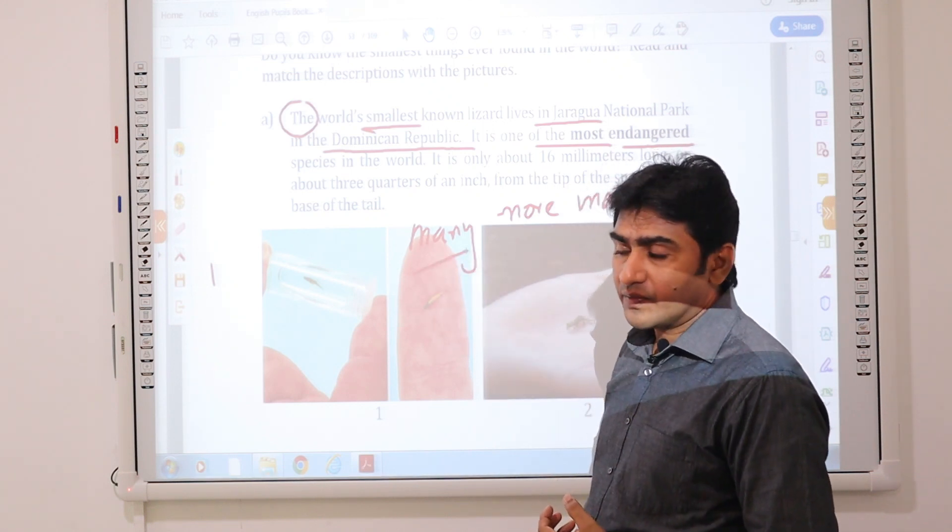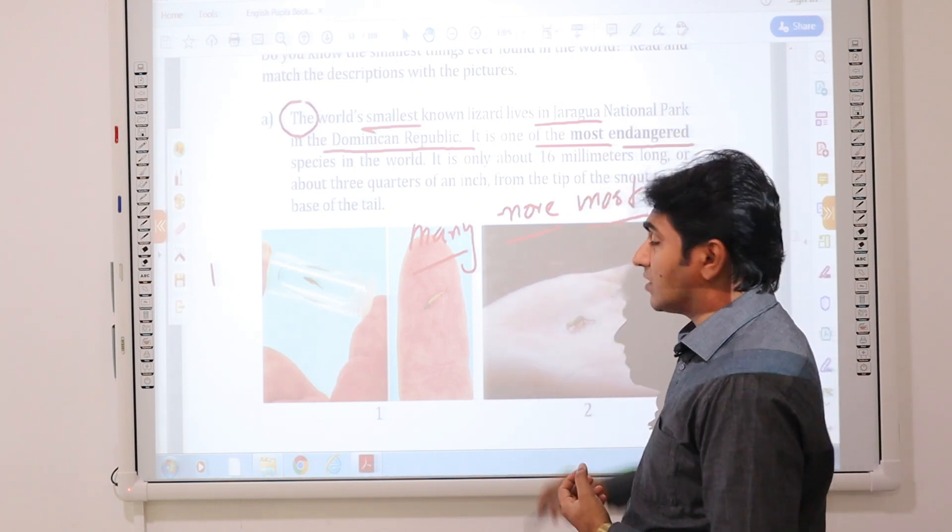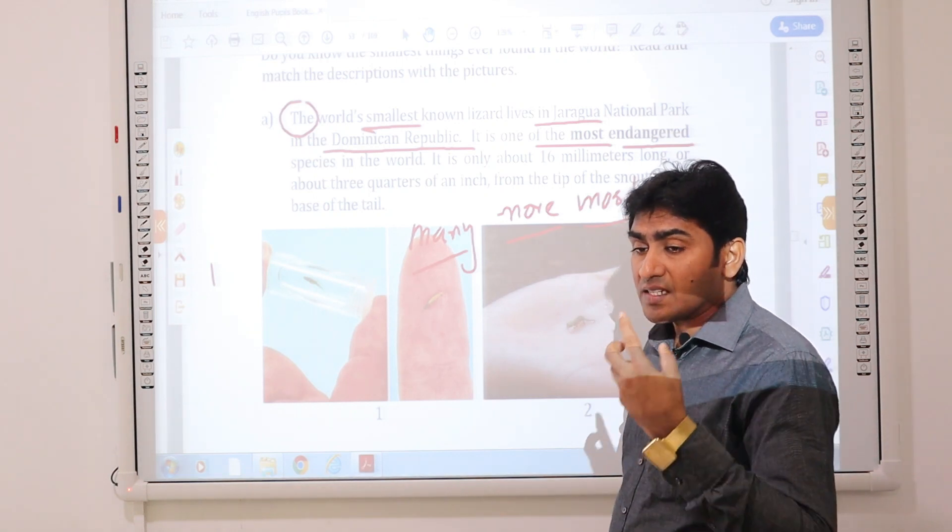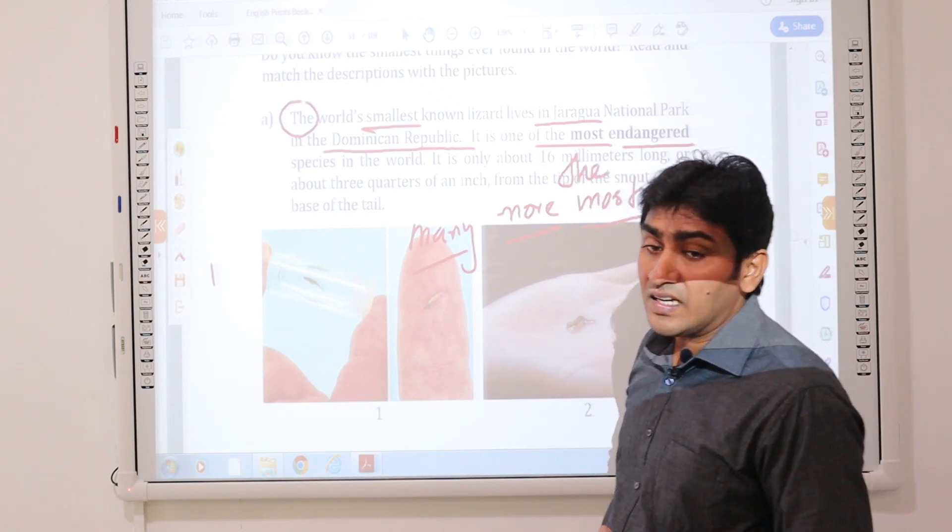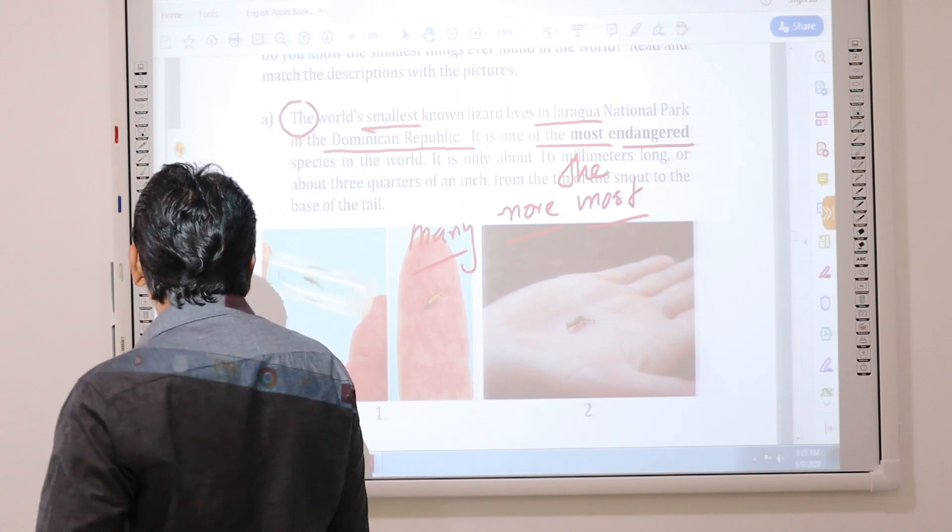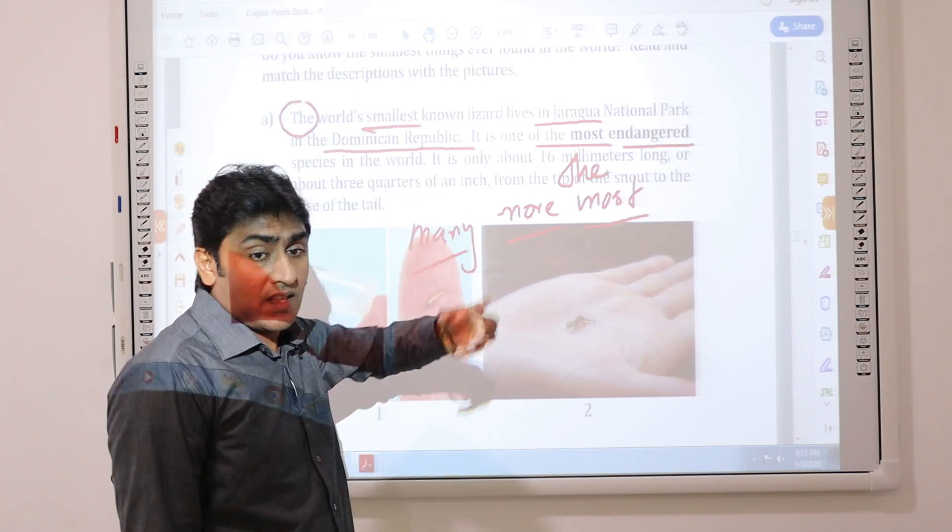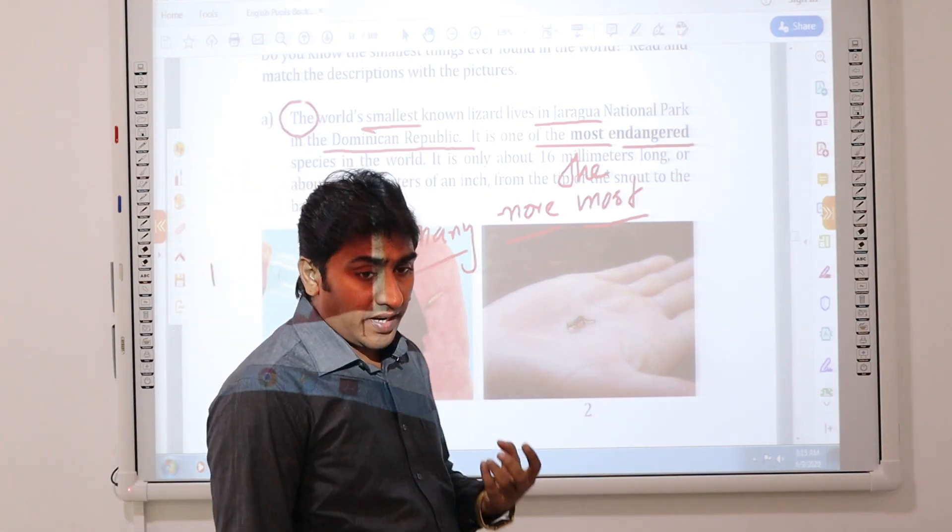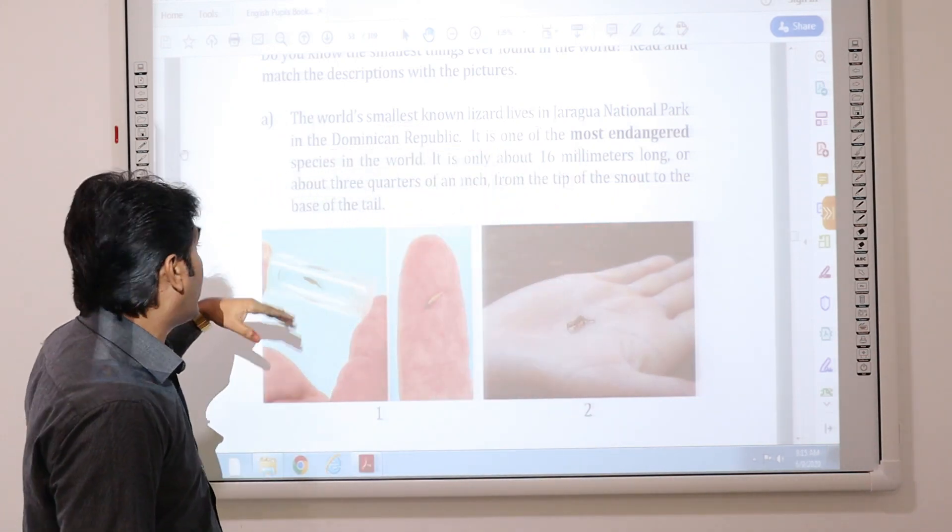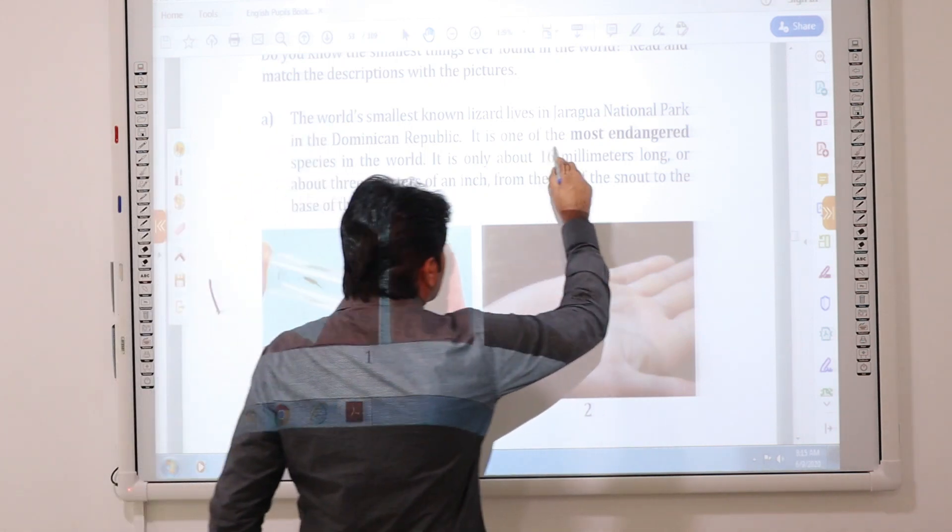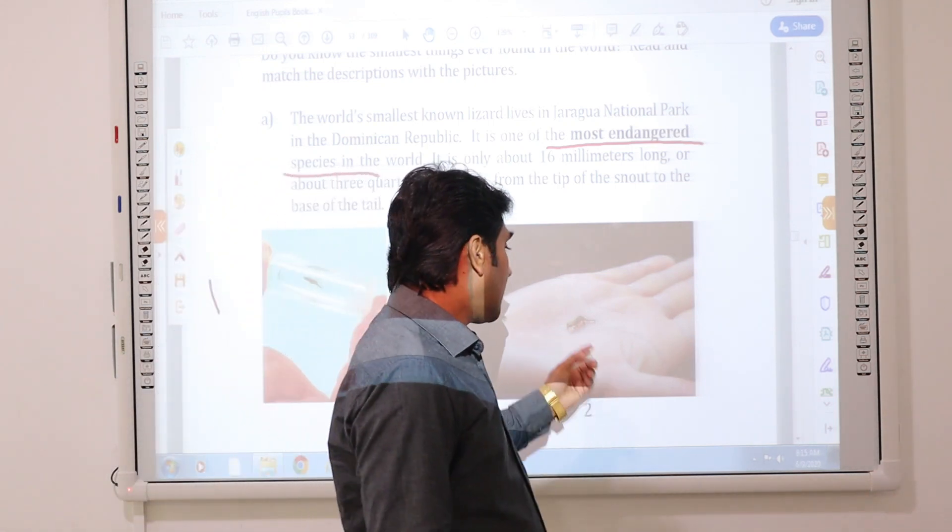Many is the positive word, more is comparative, and most is superlative. When we are using a superlative form, we use what? The most. Remember? The smallest, same as superlative. The most, the smallest, the largest, the biggest. You understand that?